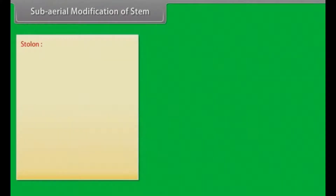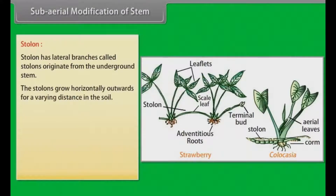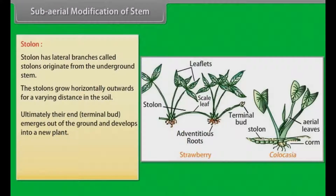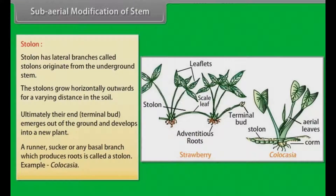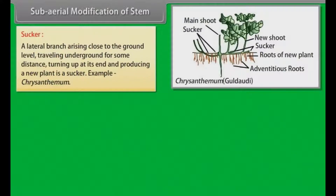In stolon, lateral branches called stolons originate from the underground stem. The stolons grow horizontally outwards for a varying distance in the soil. Ultimately, their terminal bud emerges out of the ground and develops into a new plant. A runner, sucker or any basal branch which produces roots is called a stolon. Example: Colocasia. A lateral branch arising close to the ground level, traveling underground for some distance, turning up at its end and producing a new plant is a sucker. Example: Chrysanthemum.